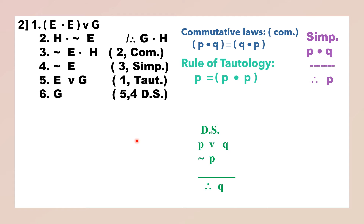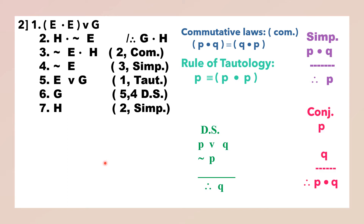Now we have arrived at G. Now you can simplify H, which is in the second premise — separate it by Simplification. Now you can join them. There is only one rule by which you can join two propositions, and that is the rule of Conjunction. Lines 6 and 7 — you are joining here. Thus we have arrived at the conclusion.